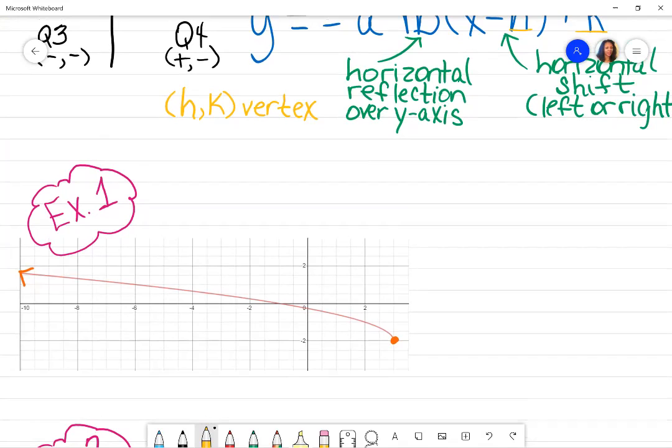My original parent function was (0, 0), and since it's a square root, it's like half a parabola on its side. Let's go back to the vertex. I went from the origin over to the right three and down two. Going down means negative, going right means positive. So this is my vertex (3, -2).